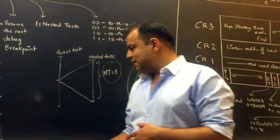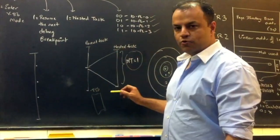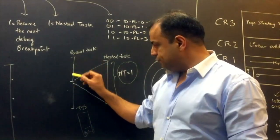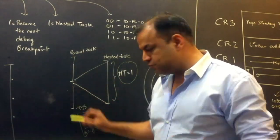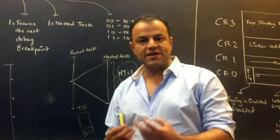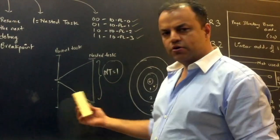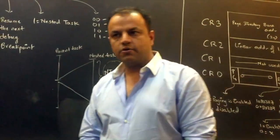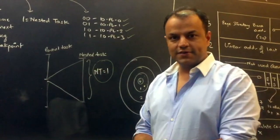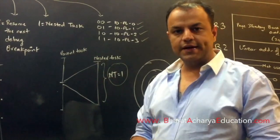For those who want to go beyond the syllabus: there is something called a Task State Segment — TSS. Each task has its own TSS. If you are doing a nested task, there will be a backlink to the original task. If you're doing the parent task, the backlink will be a null pointer. The NT bit indicates whether this backlink is valid or null, and it is checked when you perform task switching to return to the previous task.